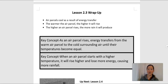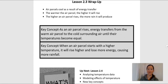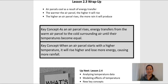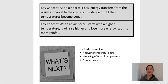Our summary and lesson wrap-up: as the air parcel cools as a result of energy transfer, the warmer the air parcel, the higher it will rise. The higher it will rise, the more rain it will produce. Here's a review of our key concepts. And then next lesson, 2.4, we're going to look at more data, do some modeling of the effects of temperature, and learn some new key concepts. See you next time.